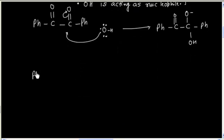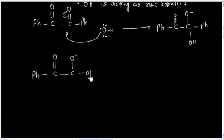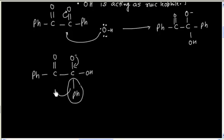In the next step, we will have migration of the phenyl group. So this negative charge comes here, and this group migrates onto this carbon. This opens up.